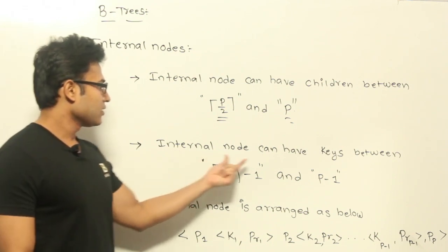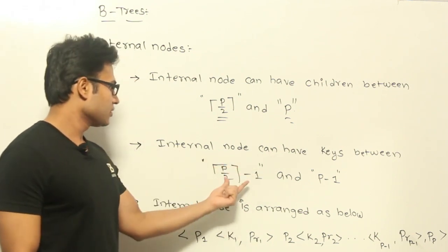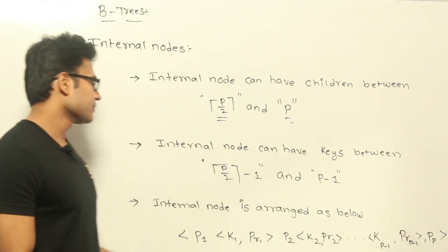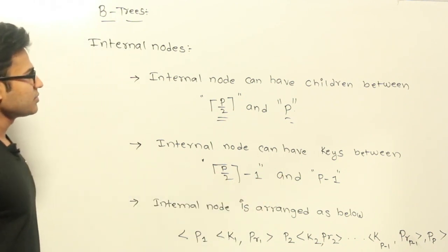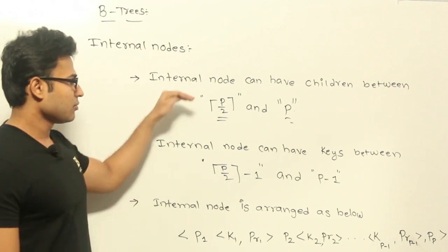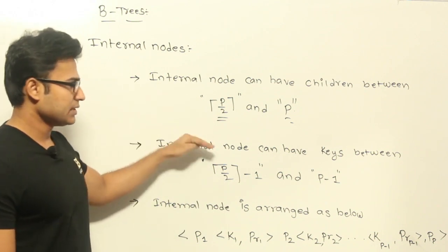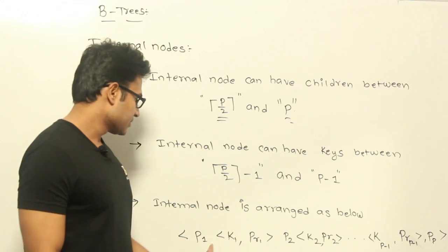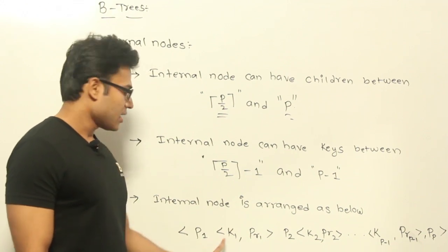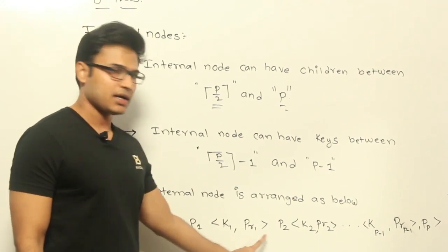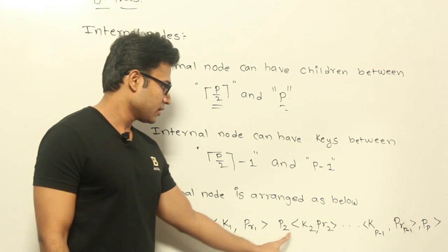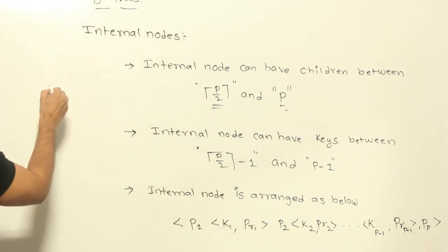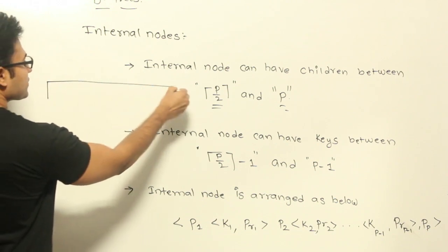The next point is that an internal node can have keys between P/2 minus 1 and P minus 1. The internal node is arranged like this: there is a pointer and there is a key-pointer pair, and again there is a pointer and there is a key-pointer pair. So if you look at the structure of the internal node, it looks something like this.